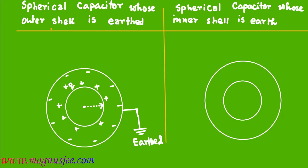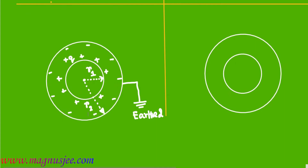r1 is the radius of the inner shell or inner conductor, and r2 is the radius of the outer shell. This is a spherical capacitor whose outer shell is connected to earth.